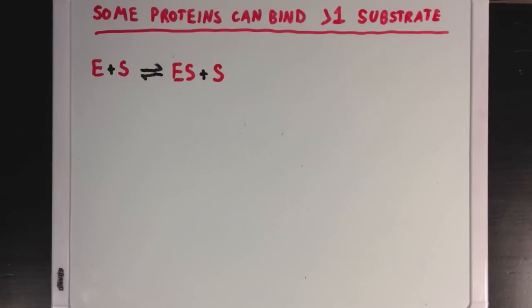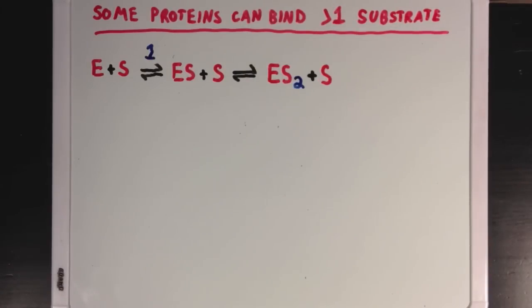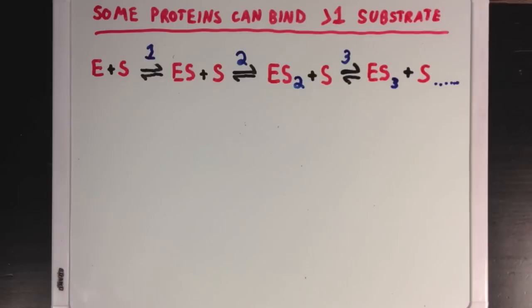E plus S can form ES through what I've called reaction 1, but some enzymes can react with another molecule of substrate to form ES2 through what I've called reaction 2, and again to form ES3 through reaction 3, and so on. Now, these enzymes can form product at any stage of this process, no matter how many molecules of substrate are bound.